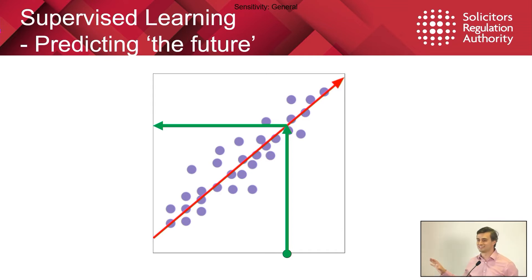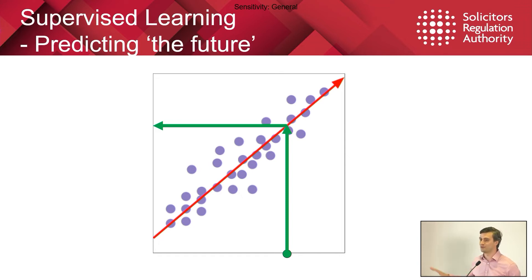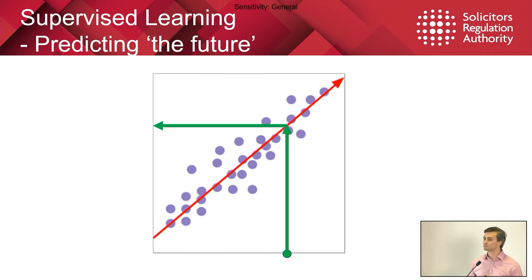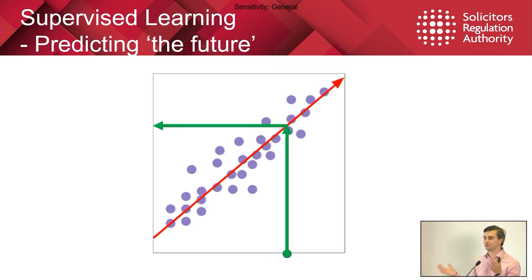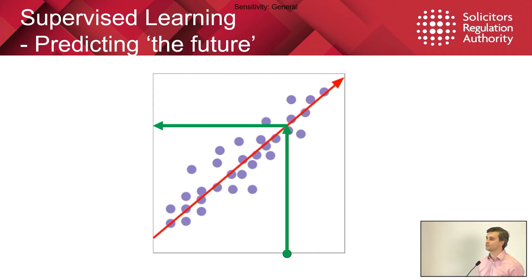Obviously these examples are a little bit trite and probably made more trite by me trying to shoehorn them into being relevant to law firms. We wouldn't actually use AI in these cases — there are only two dimensions, we could do all of this by eye. AI really shines where we have lots of data, so rather than two dimensions, we're dealing with ten, hundreds, millions of dimensions.